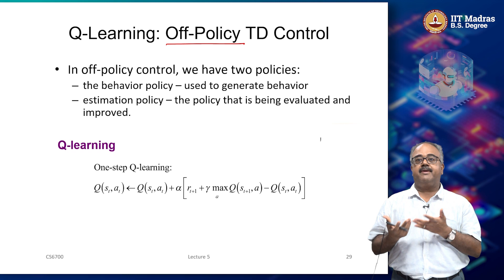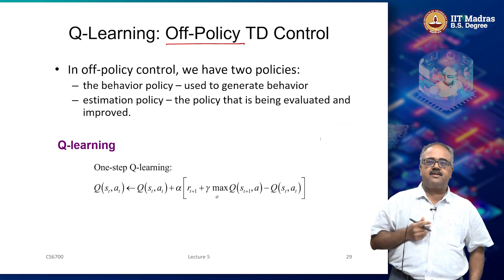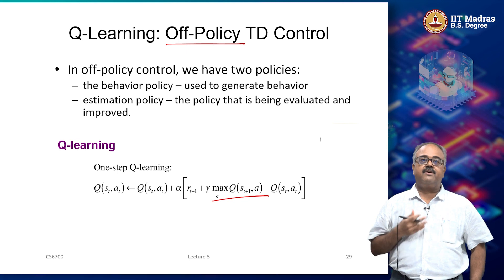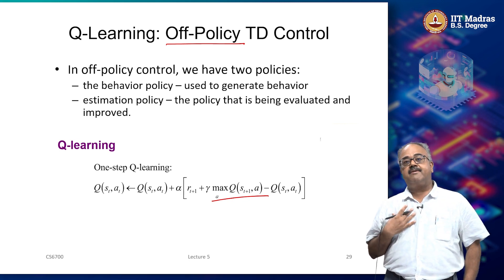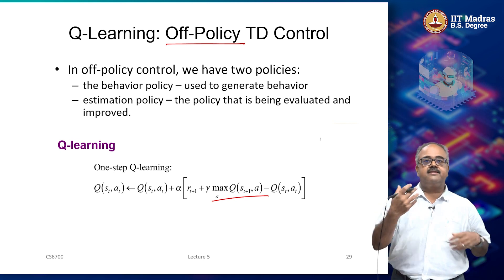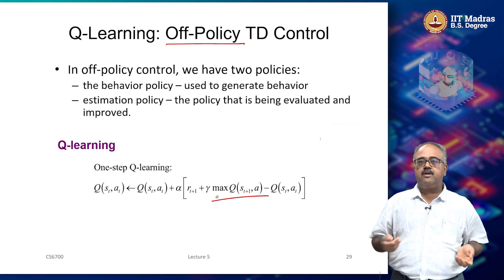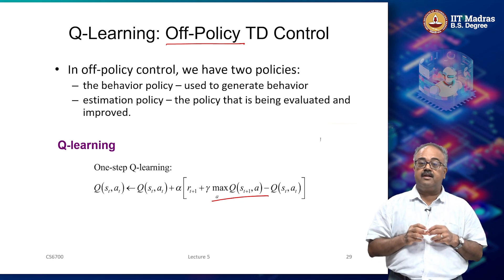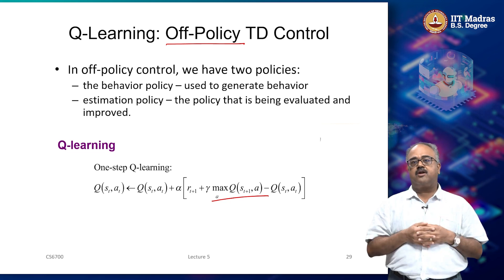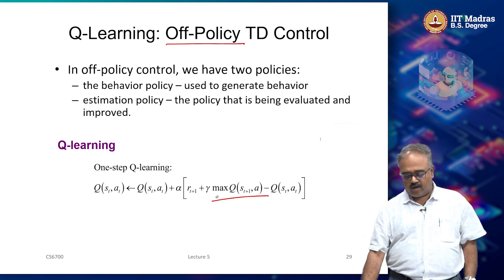We need some exploratory behavior in the world because if we behave greedily we get stuck in local optima. We look at an exploration policy for generating samples, but we do not use the exploration policy when doing the updates — we use the greedy policy. Since the way we draw samples is different from the policy being evaluated, this is called off-policy learning. The behavior policy is some kind of epsilon-greedy, while the estimation policy is the greedy policy.